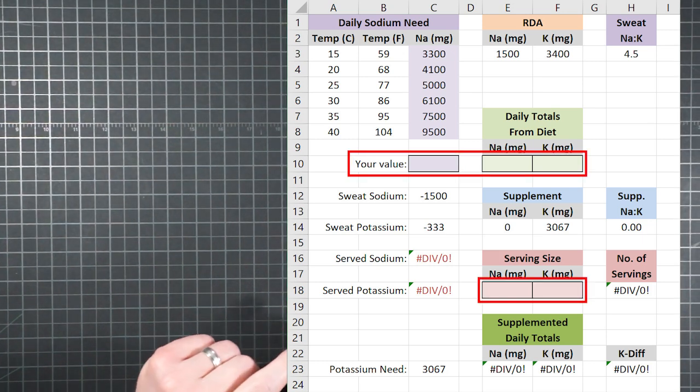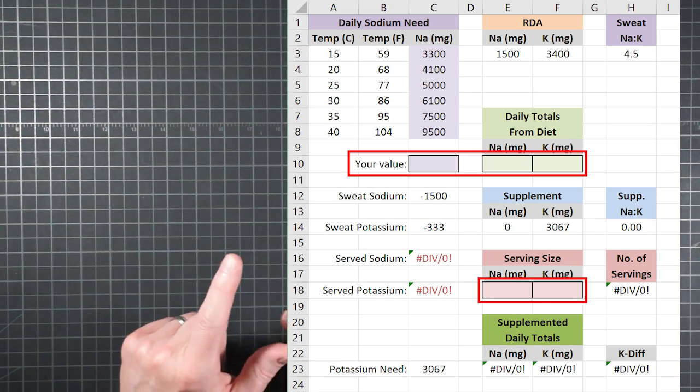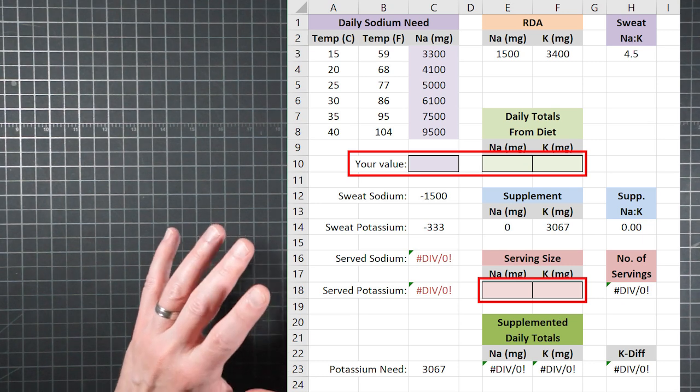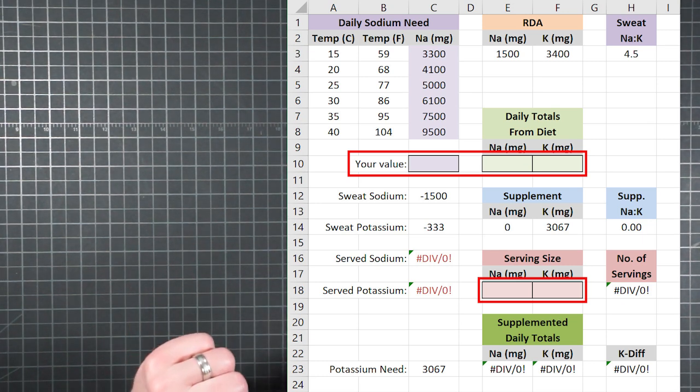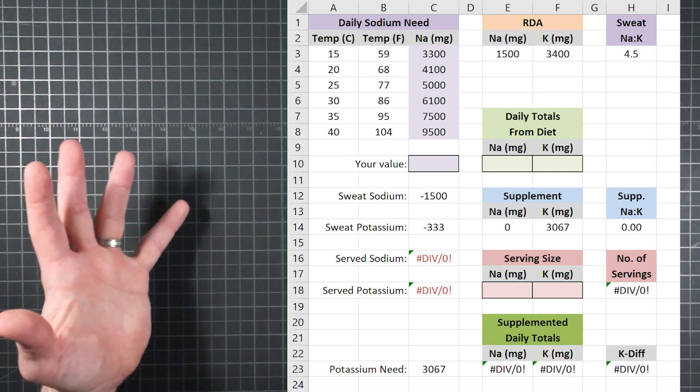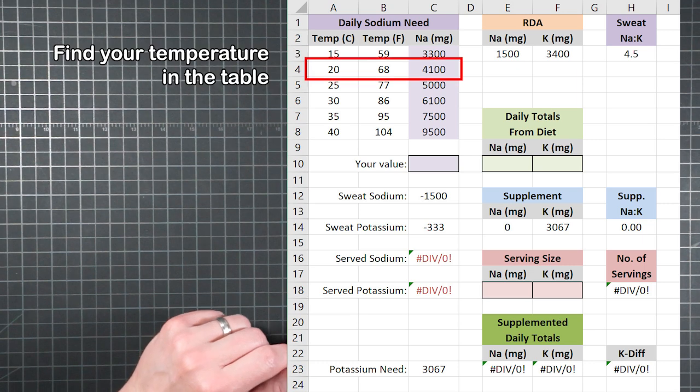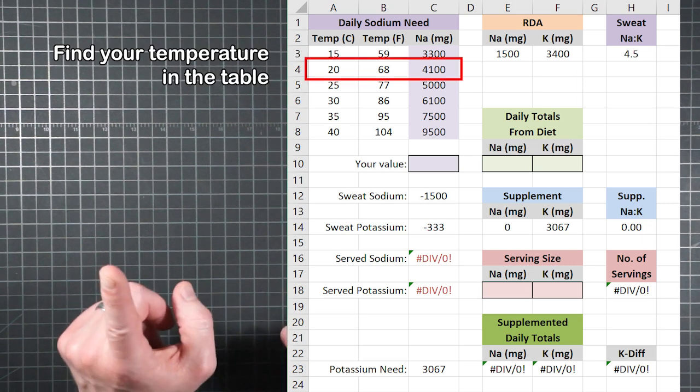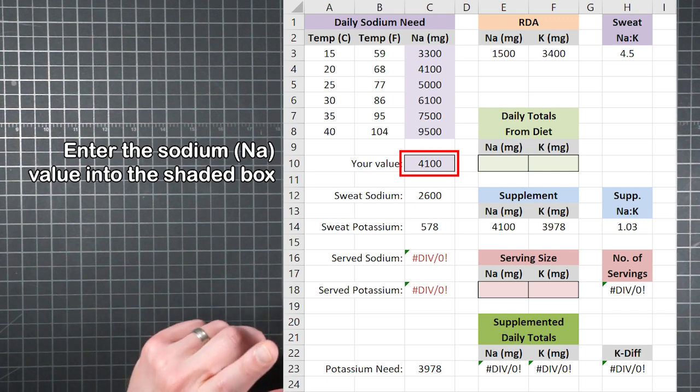These shaded boxes outlined in black are the only ones you put numbers into during normal operation. Unless you want to change some of the assumed values used in formulas, these five are all you should be filling in. Now personally, I don't like hiking on hot days. If I had my druthers, it would always be 68 degrees.